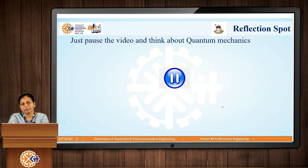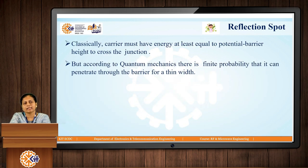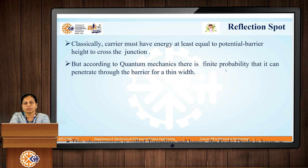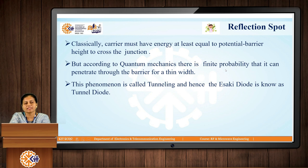Now think about what quantum mechanics tells us. Classically, a carrier must have energy at least equal to the potential barrier height to cross the junction. But according to quantum mechanics, there is a finite probability that it can penetrate through the barrier if the barrier width is very thin. This phenomenon is called tunneling, and it is used in the Tunnel Diode.